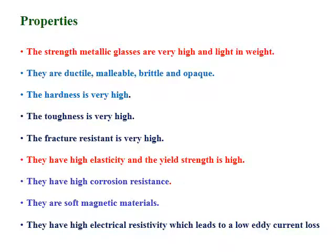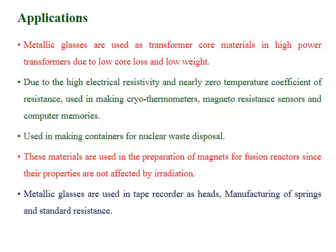The general properties of metallic glasses include very high strength and light weight. They are highly ductile and malleable, though sometimes brittle and opaque. Hardness, toughness, and fracture resistance are all very high. They have high elasticity, high yield strength, and high corrosion resistance, which makes them useful in many important areas. They are soft magnetic in nature, meaning they can be easily magnetized and demagnetized, and their high electrical resistivity results in low eddy current loss.